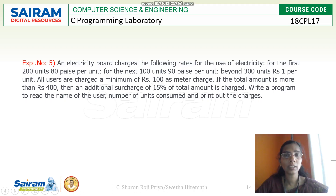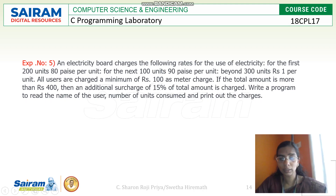If the total amount is more than 400, an additional surcharge of 15 percentage of the total amount is charged. Write a program to read the name of the user, number of units consumed, and print out the charges.